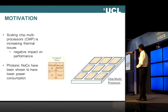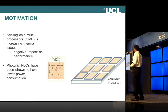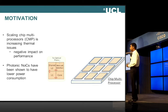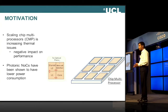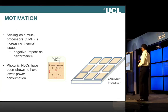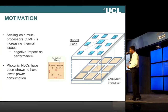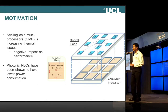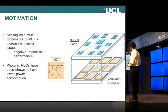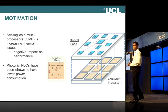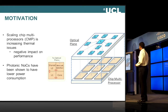The problem that we have when we scale this type of technology is the thermal issue. It has a negative impact on performance. A lot of research has been done on possible ways to go around this problem, and the one we're going to look at today concerns photonic network on chips. Basically, the network interface would be connected to an optical port, and the optical ports would be connected centrally to an optical crossbar.